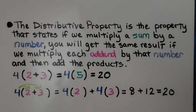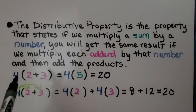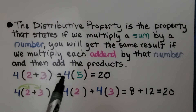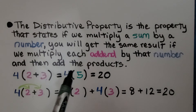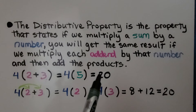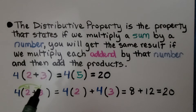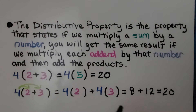So we can multiply 4 times (2 plus 3). 2 plus 3 is 5, so that's 4 times 5, which equals 20. We can also do 4 times 2 plus 4 times 3: 4 times 2 is 8, 4 times 3 is 12, and 8 plus 12 is equal to 20.